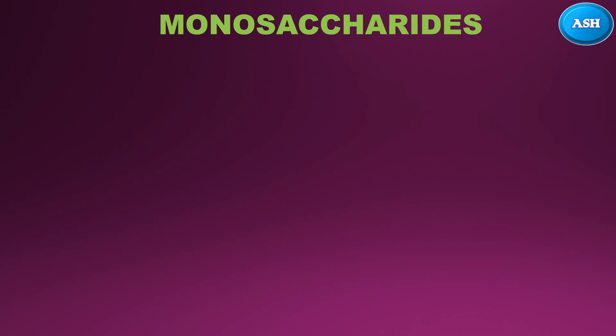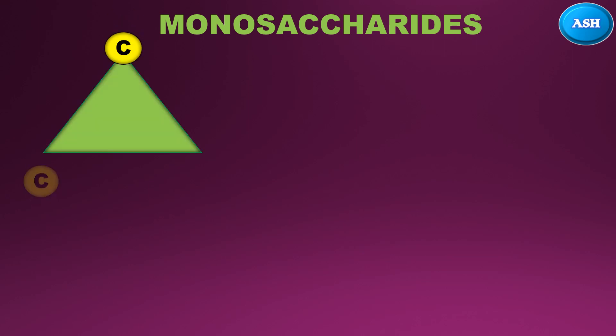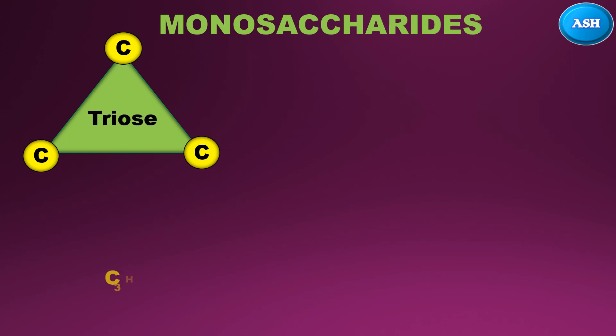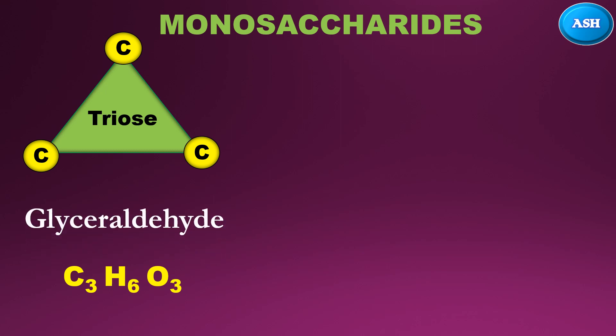First, monosaccharides. Monosaccharides are further classified based on carbon numbers from three to seven. Firstly, with three carbon atoms, known as triose. According to the general formula of carbohydrates, where n is three, the formula is C3H6O3. One example of triose is glyceraldehyde.